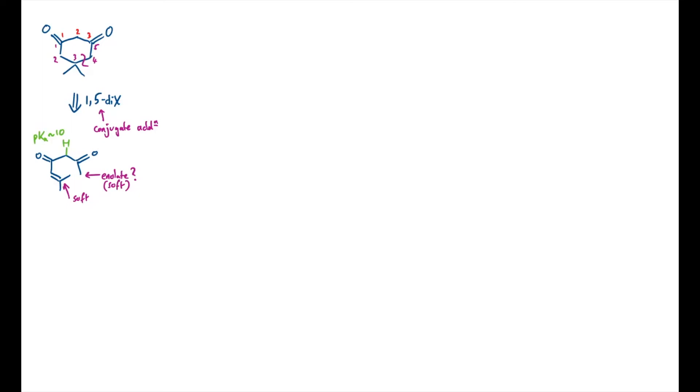The alternate disconnection will be looking at the 1-3 relationship so the 1-3 difunctionalized route and this is strongly associated with enolate chemistry directly and specifically using aldol type reactions. This time I'm going to disconnect between 2 and 3 at the top and this will take me back to something like this and I've actually got quite a lot of choice of what I put in as my new carbonyl group here. I'm going to need to form the enolate in this position here so I can worry about that in a second.